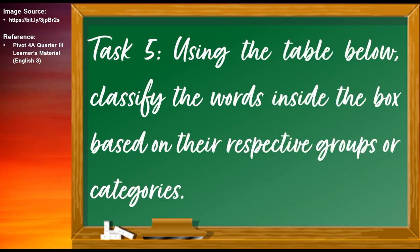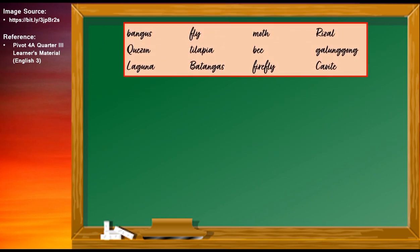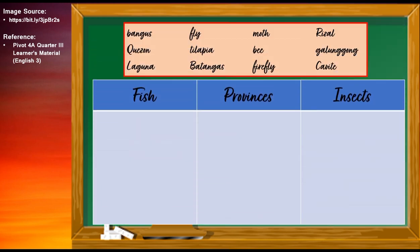For your fifth task, using the table I will show you, classify the words inside the box based on their respective groups or categories. The words include bangus, fly, moth, Rizal, Quezon, tilapia, bee, galunggong, Laguna, Batangas, firefly, and Cavite. The three categories are fish, provinces, and insects. Bangus belongs to the category of fish. Fly belongs to the category of insects.